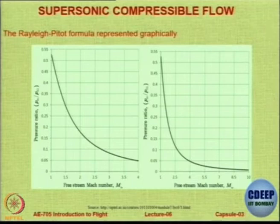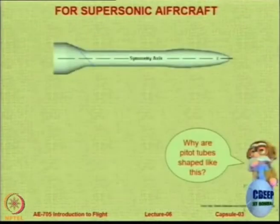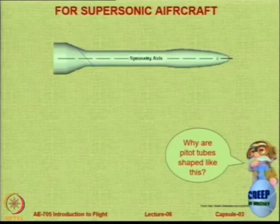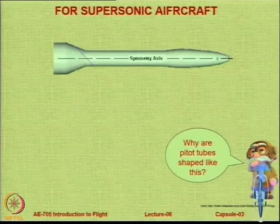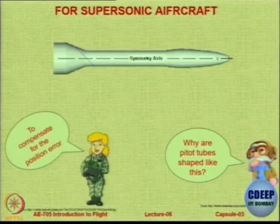This is the Rayleigh-Pitot formula which is coded into the pitot tube system. I want you to see the kind of shape you will find on a pitot static tube used on all aircraft that go faster than the speed of sound. In supersonic flow there will be a central symmetry axis, a bulbous nose in the front, and also something on the back. The question is: why are pitot tubes shaped like this in the case of supersonic aircraft? The answer is that we need to compensate for the position error — the error coming because of its position and also because of the presence of shocks.